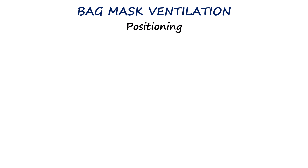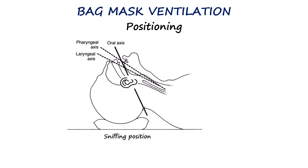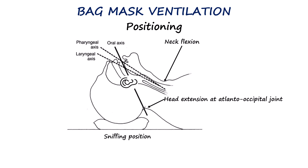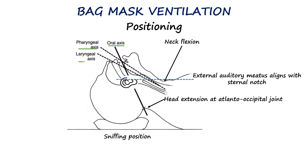Effective bag mask ventilation depends on optimal positioning and maintaining a reliable mask seal. The most effective position in most adults is the sniffing position, provided there is no concern for cervical spine injury. This involves flexing the neck on the torso and extending the head at the atlantooccipital joint, usually with the help of a pillow or folded towel placed under the occiput. When done correctly, the external auditory meatus should align with the sternal notch, helping to align the oral, pharyngeal and laryngeal axes to make the airway more open.